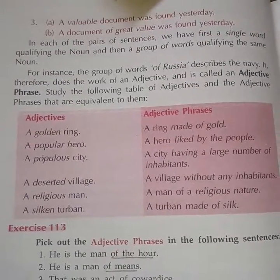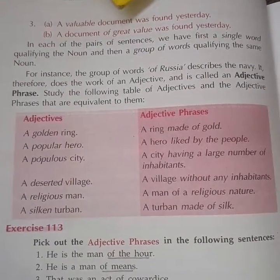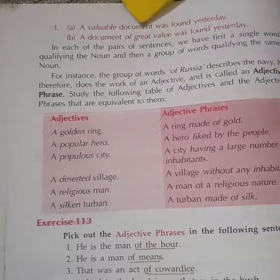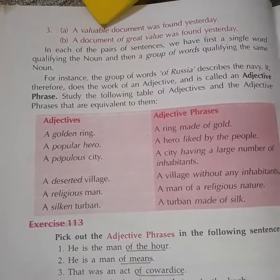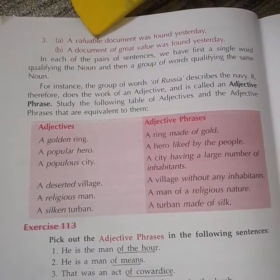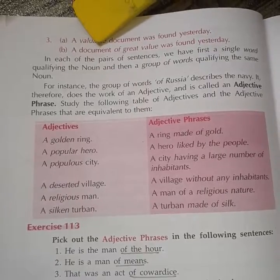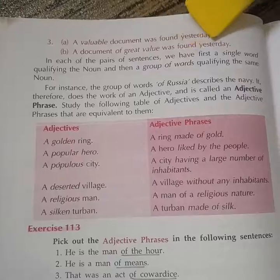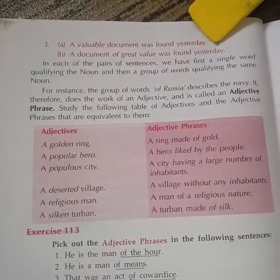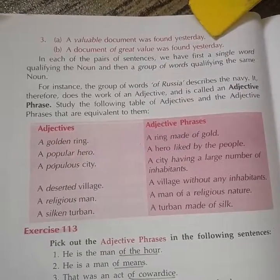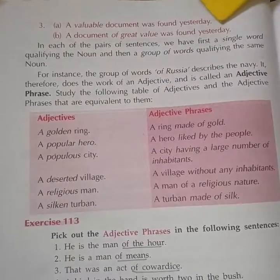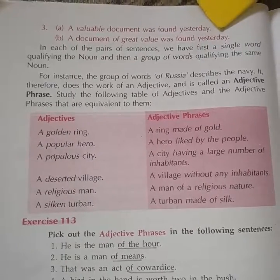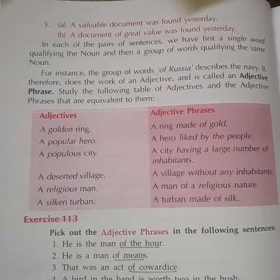Now, you can see on the next page, page 200: 'A valuable document was found yesterday.' Which document? Valuable. 'Valuable' is the adjective. We can change it into an adjective phrase: 'A document of great value was found yesterday.' So a one-word adjective can be changed into a group of words to form an adjective phrase. We have seen this in these three examples.